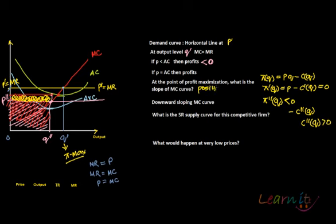What happens if the P equals MR curve intersects at the downward-sloping portion of the MC curve? We will address that in the next recording, and we will also discuss what exactly the short-run supply curve looks like for this particular firm.